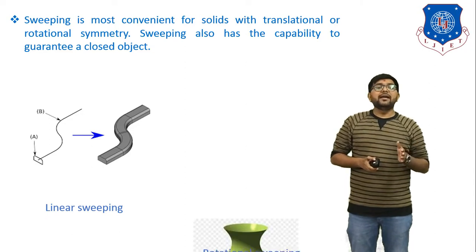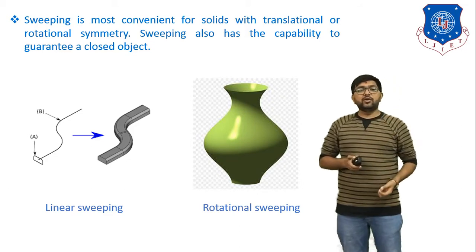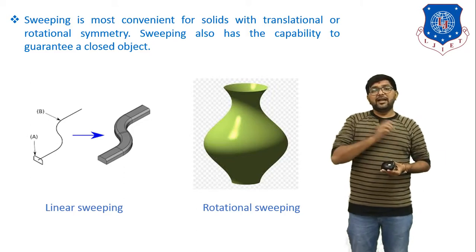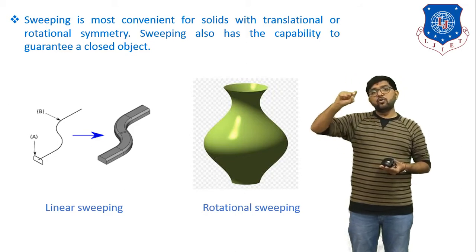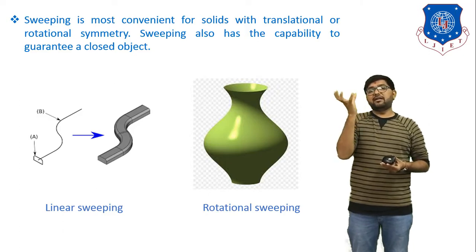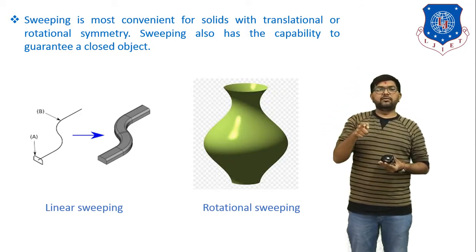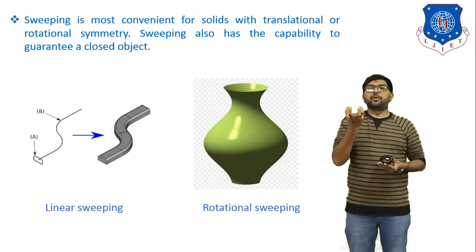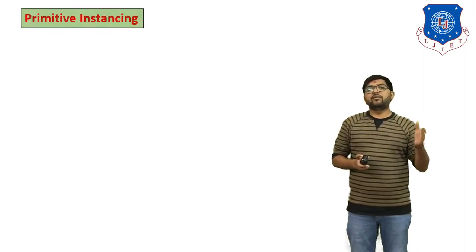The method must also be capable of guaranteeing a closed object — when using rotational sweeping, the resulting object must be a closed object. In linear sweeping, we draw a rectangle, give it a path, the rectangle moves along the path and generates the object. In rotational sweeping, we draw a simple cross-sectional view and rotate it about the center axis to generate a curved 3D shape. These are examples of linear sweeping and rotational sweeping — the first method of solid modeling.